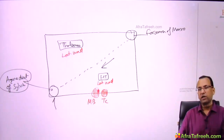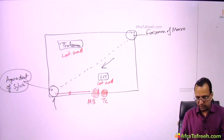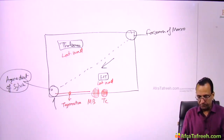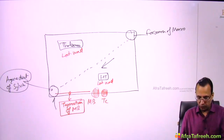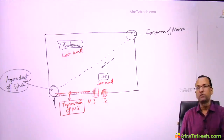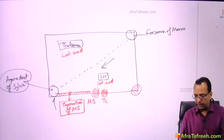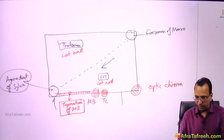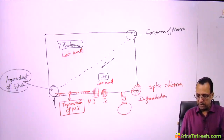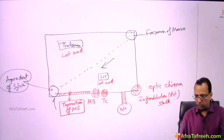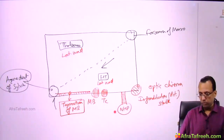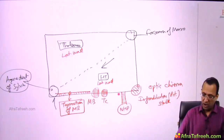Other structures at the floor of the third ventricle include the tegmentum part of the midbrain. The most anterior structure is the optic chiasma. Behind that is the infundibular stalk, also called the pituitary stalk, with the neurohypophysis — the posterior pituitary — which is a downward extension of the diencephalon — suspended there.